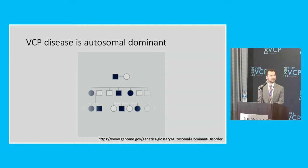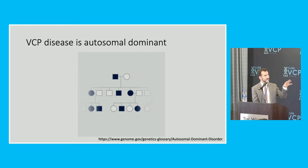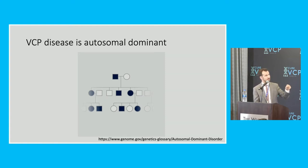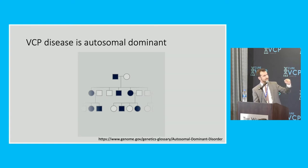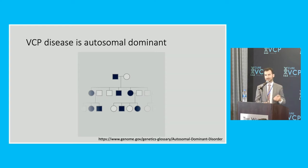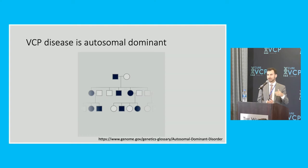VCP disease is autosomal dominant — it's a genetic condition. This figure highlights what the family tree looks like for a disease that's autosomal dominant. At the top you see the two circles representing parents. The circle shaded in black is a person affected by the disease. In the second generation you have some people with shaded squares indicating they've been affected and some that haven't. The family structure will tend to look like this, where you have people affected in multiple generations as well as multiple people affected in the same generation.